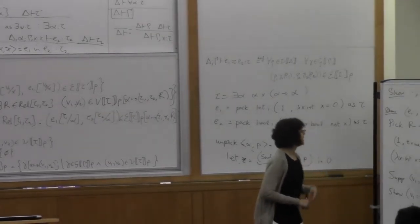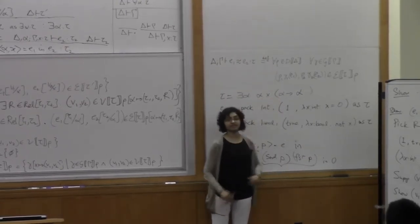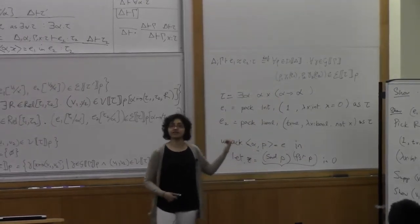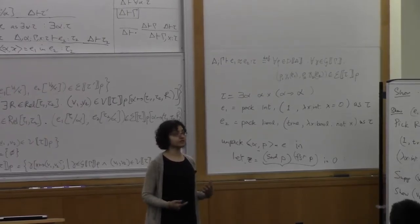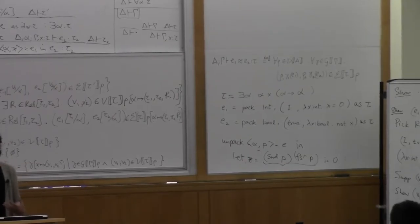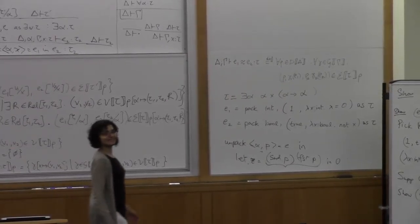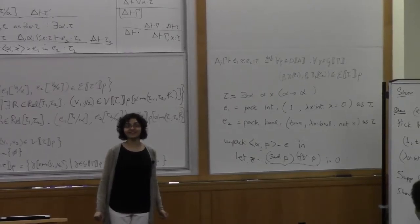And the phrase means that the representation of the witness type of all of the alphas is something that clients of this existential type will never be able to see. And that's sort of the essence of modularity in the software that we build using statically typed, good statically typed languages.